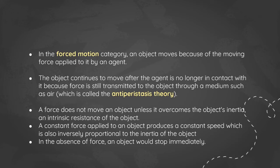In his forced motion category, he believed an object would move because of the moving force applied to it by an agent, and that the object continues to move after the agent is no longer in contact with it because the force is still transmitted to the object through a medium such as air. He called this his anti-peristasis theory. He believed a force does not move an object unless it overcomes the object's inertia, and that in the absence of force an object would stop immediately.